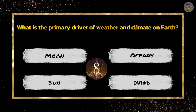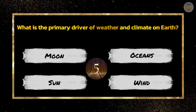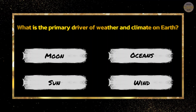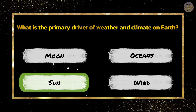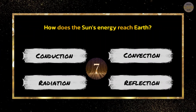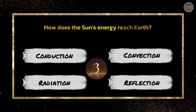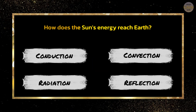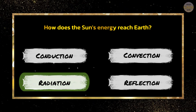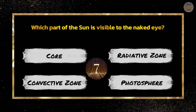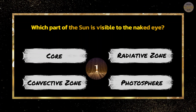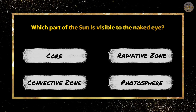What is the primary driver of weather and climate on Earth? The Sun. How does the Sun's energy reach Earth? Radiation. Which part of the Sun is visible to the naked eye? Photosphere.